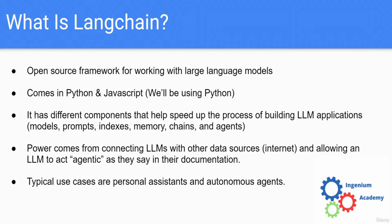LangChain offers a lot of functionality that allows us to work with our prompts to build better prompts and to automate that process. It allows us to create vector stores and work with embedding models in OpenAI's API and other models. It allows us to manage the memory in a chat conversation. It also allows us to chain together LLMs and prompts, so we can send an input prompt into an LLM and forward that to the next LLM, chaining their inputs and outputs to produce a final output.